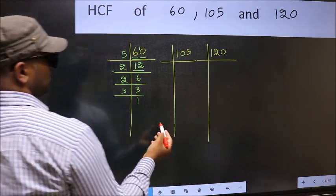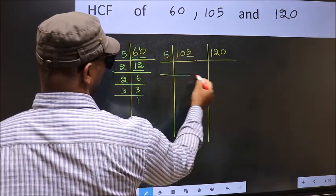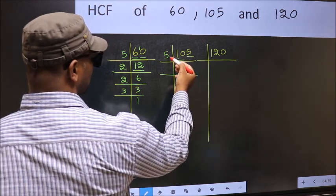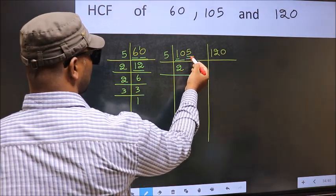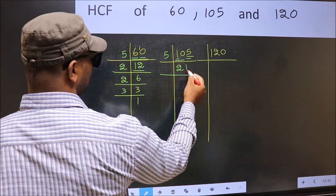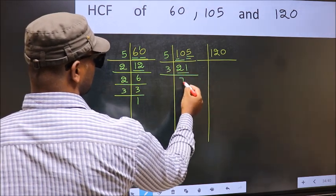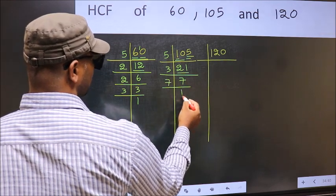Now the other number. Last digit 5, so take 5. First number 1, smaller than 5, so 2 numbers make 10. When do we get 10 in 5 table? 5 times 2 is 10. The other number 5, when do we get 5 in 5 table? 5 once 5. Now 21 is 3 times 7. 7 is a prime number, so 7 once 7.